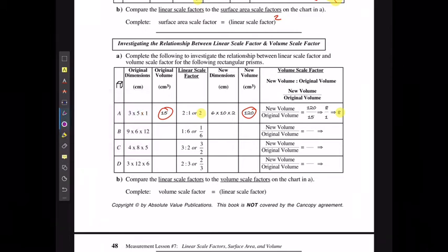For the second one, 9 times 6 times 12 is gonna be 648. 1.5 by 1 by 2 is gonna give me 3. And 3 over 648 is going to give me 1 over 216.